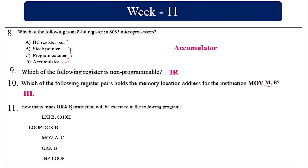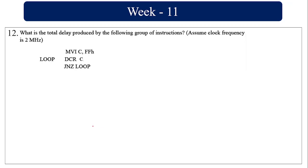How many times will the XRA B instruction be executed? The BC register pair is loaded with 0010h (hexadecimal). The DE register data is decremented by one, C content is moved to A, a logical OR with B is performed, and if the result is not zero the loop repeats. The decimal value of 0010h is 16, so the loop will be executed 16 times.